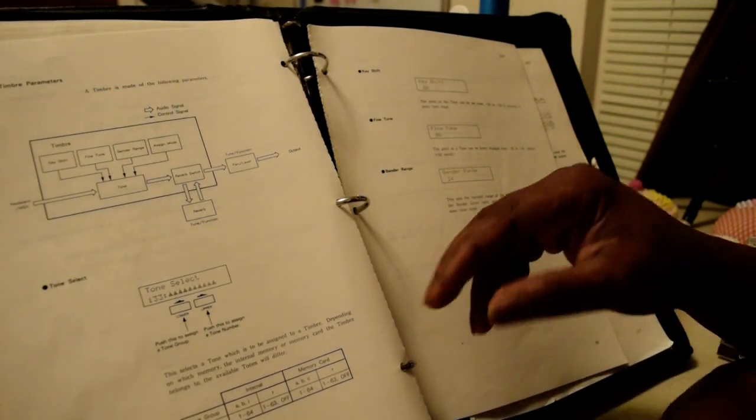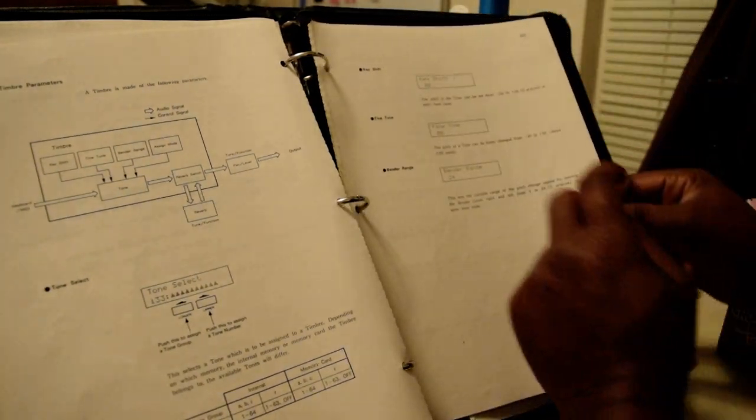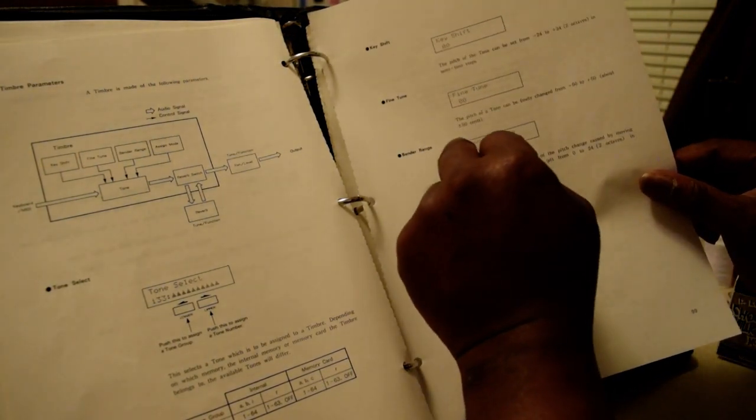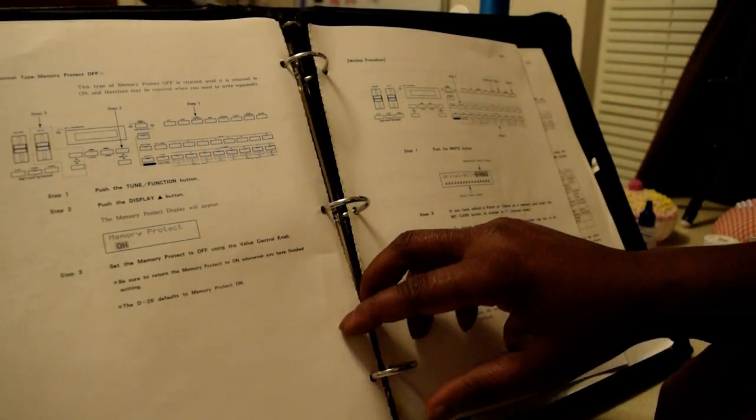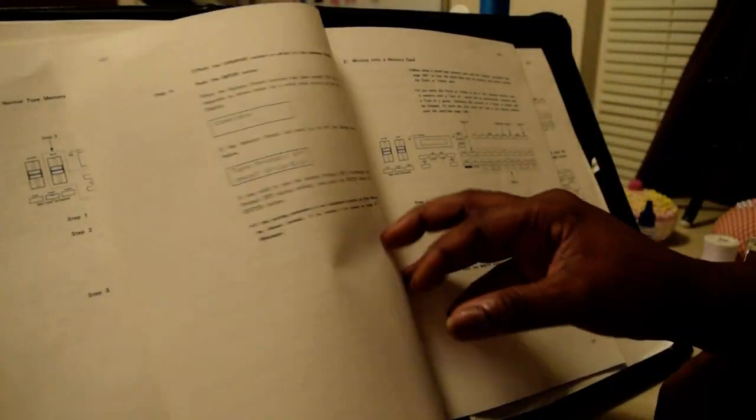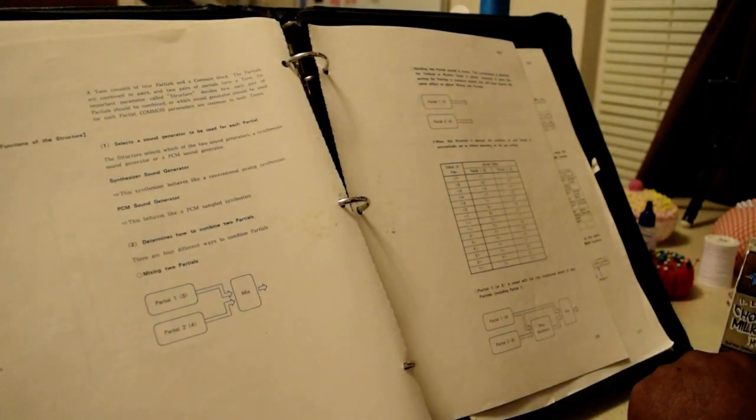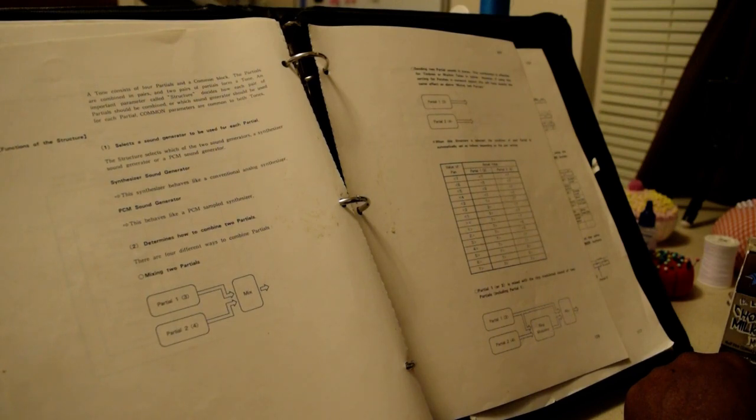And these are the different tones right here, the internal memory card, and the key shift from negative 24 to negative 22, fine tune, bender range, right there. Let me see, writing on the memory card, tones. Now the tones, now I'm going to try to explain the tones to you. Let me see what it says here. Okay, and this says a tone consists of four partials and a common block.